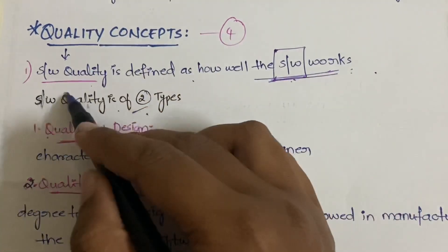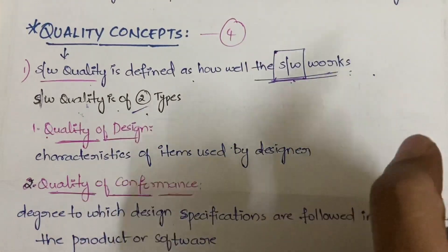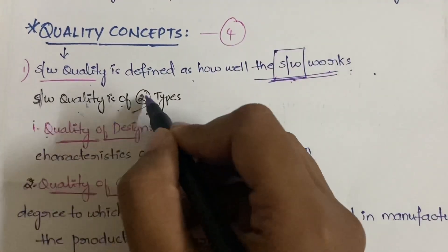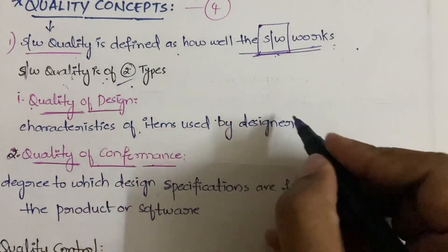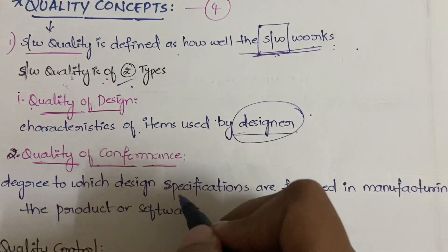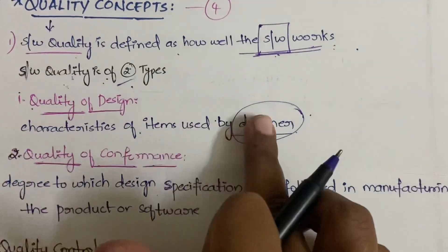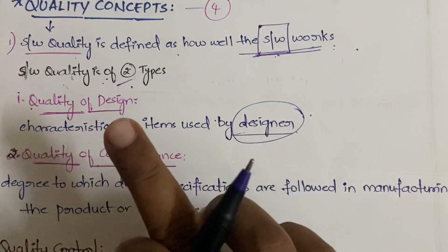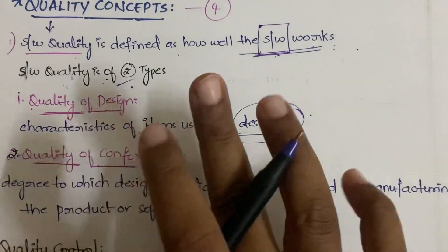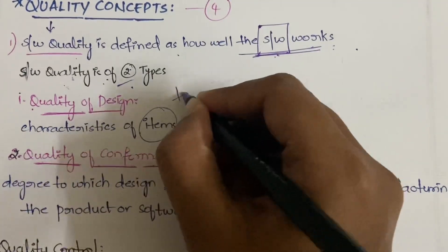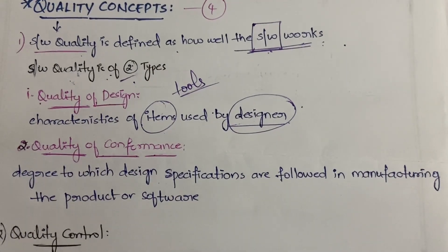In software quality we have two types. In general, quality means whether an item is serving the purpose for which we bought it. In software quality, the first type is quality of design, which refers to the characteristics of the items or tools used by the designer — whether the designer is using good quality, highly secured, or highly flexible tools.